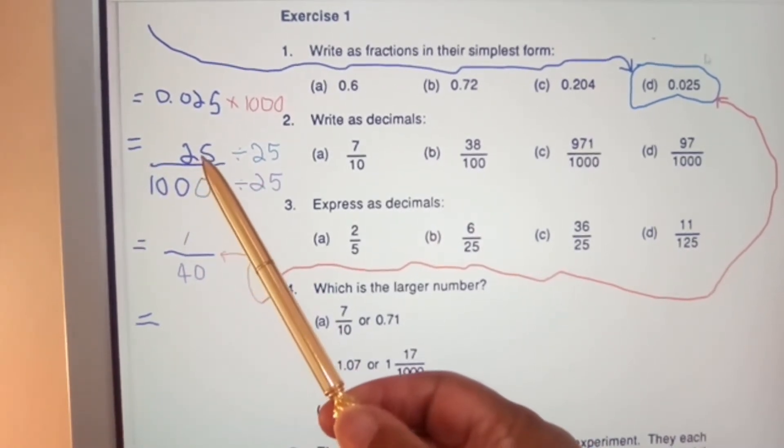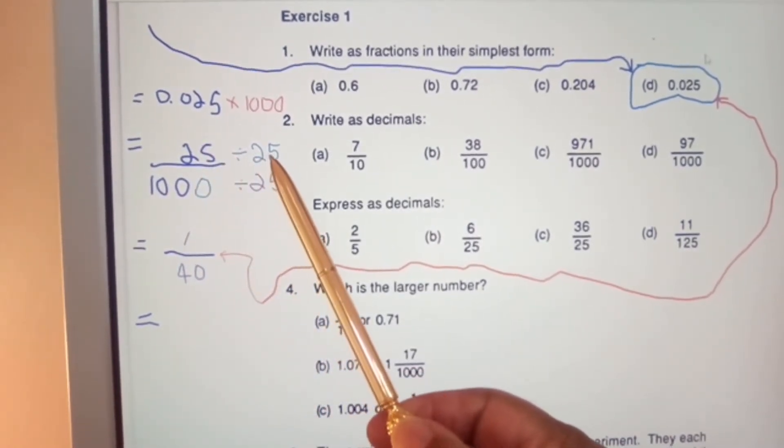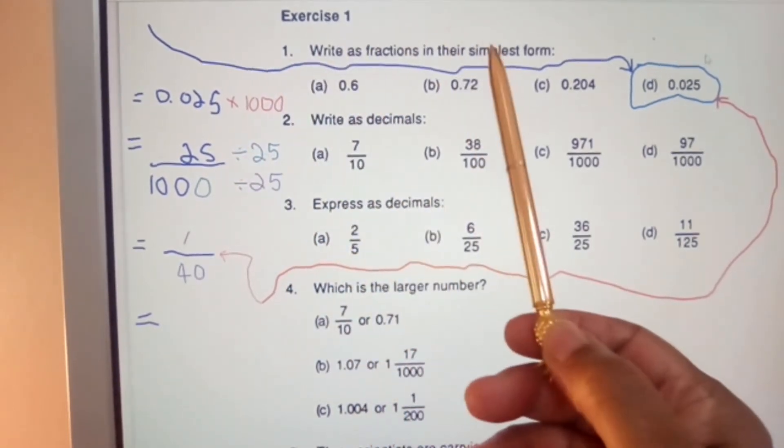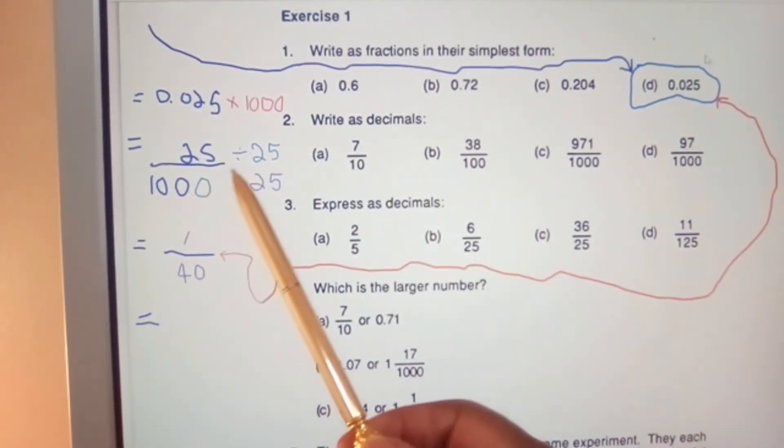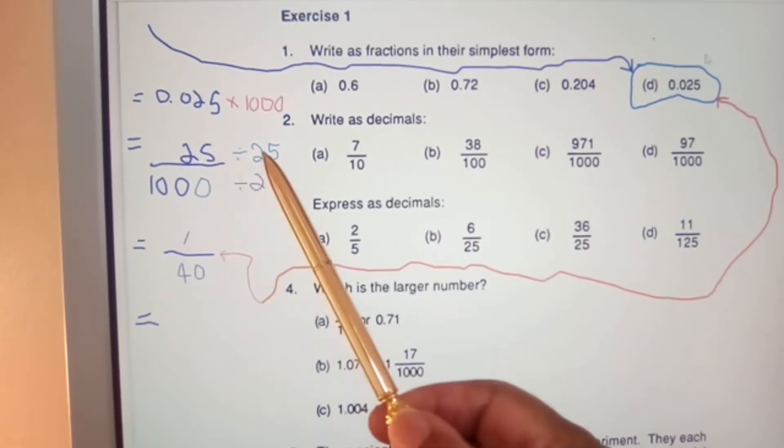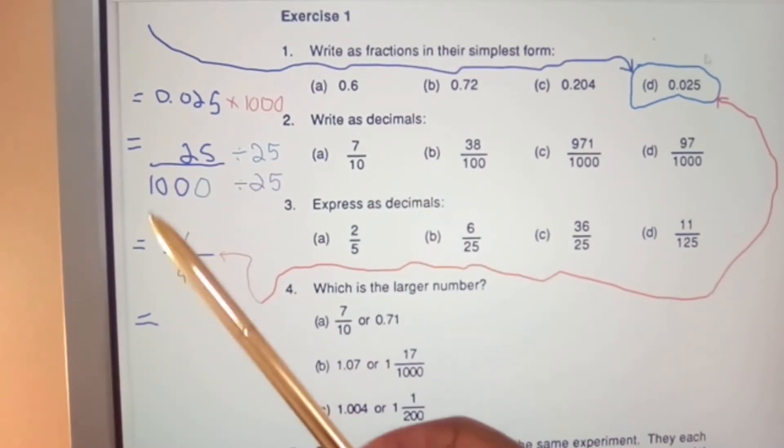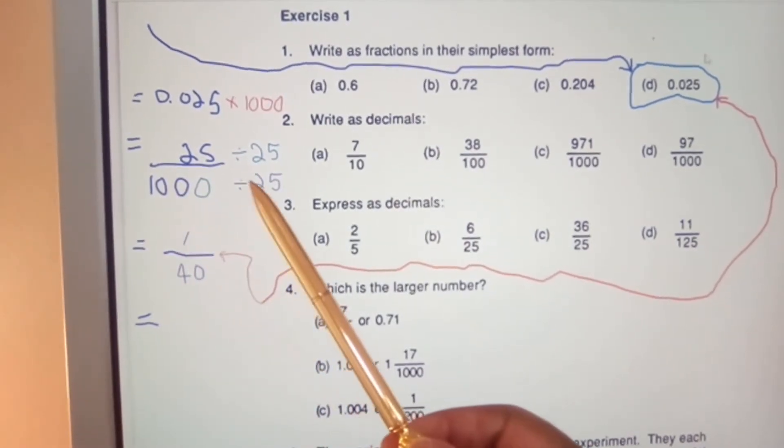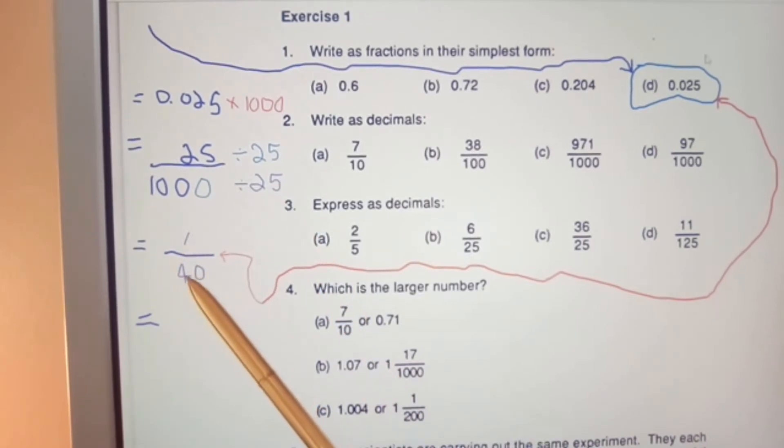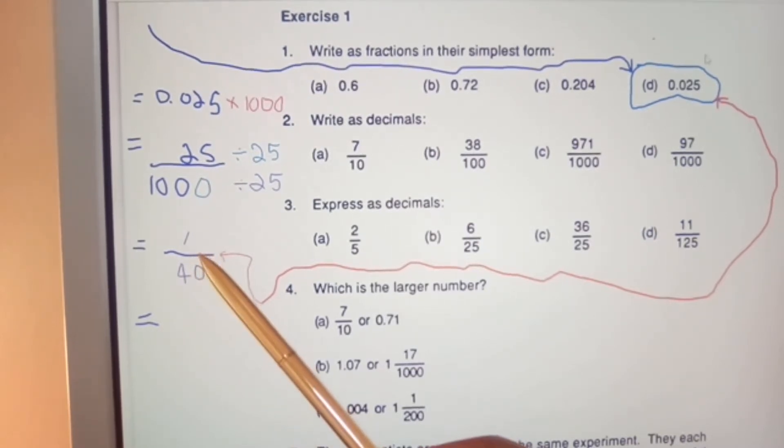...is divide 25 by 25 in order to bring it to its simplest form. That gives me: 25 into 25 goes how many times? Once. 1,000 divided by 25 gives me 40.